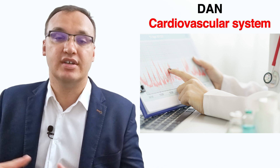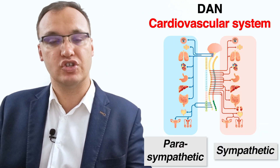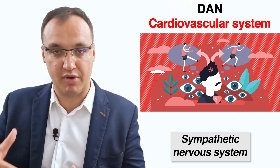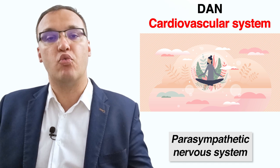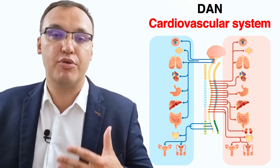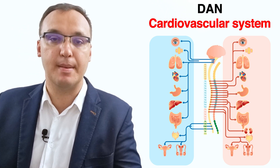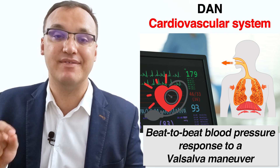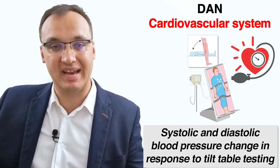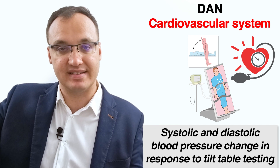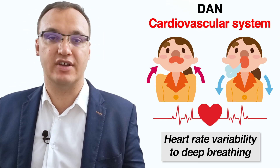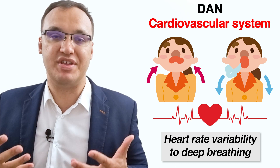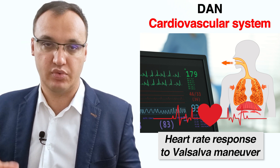There are many tests we can do to check this. We have the sympathetic nervous system and the parasympathetic nervous system. The sympathetic activates the fight-or-flight response during a threat, while the parasympathetic restores the body to calm. Since the heart is connected to both systems, independent tests for each produce better results. Tests for the sympathetic system include beat-to-beat blood pressure response to a Valsalva maneuver, and systolic and diastolic blood pressure change in response to tilt table testing or active standing. Tests for parasympathetic function include heart rate variability to deep breathing, heart rate response to standing, and heart rate response to a Valsalva maneuver.